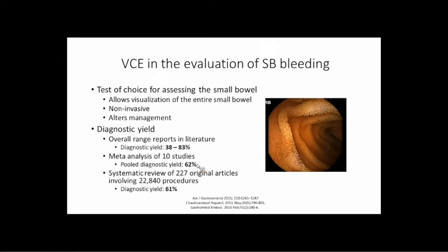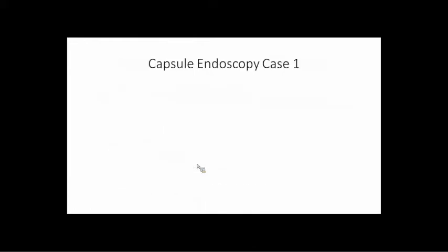This really depends on patient selection. A 40-year-old woman with menorrhagia who is iron-deficient has a very low pretest probability of having a small bowel lesion. But a 75-year-old man with AFib on Coumadin with aortic stenosis has a much higher likelihood. So the pretest probability matters a lot in interpreting the diagnostic yield.